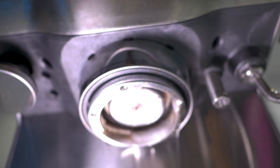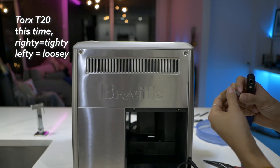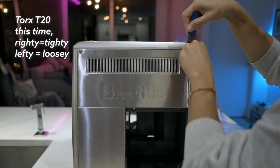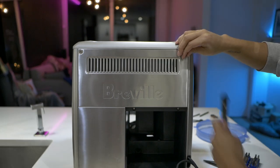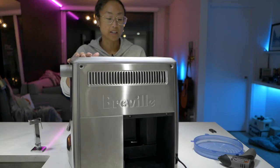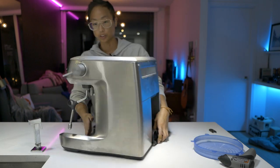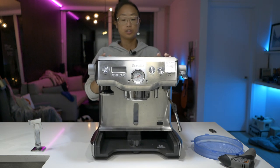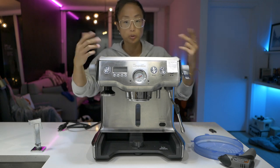There's two more screws that you have to get rid of in the back. There are Torx T20 to remove this. Really long screws. Same on the other side. To simplify things a little bit, I just remove the water tank and the drip tray in the front so that it's a little bit easier to access everything and to not make a mess.